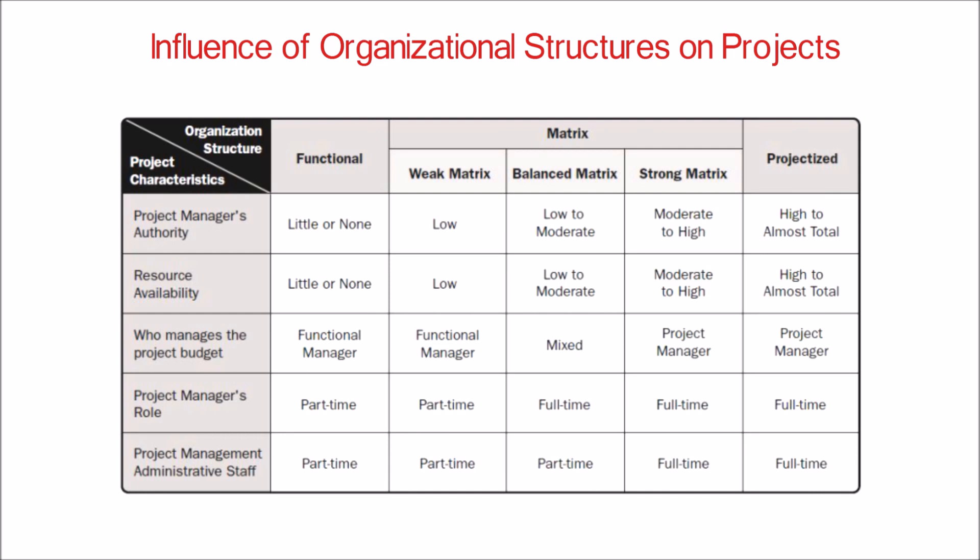In a pure functional organization, the PM doesn't have any authority and merely works as a coordinator. As we move from weak matrix to projectized organization, PM's authority increases and is at peak in a projectized organization. Similarly, resource availability increases from none or low in the functional organization to full time in the project-based organization. In a functional and weak matrix environment, functional managers manage the budget, whereas in a strong and projectized organization, the PM manages the project budget.